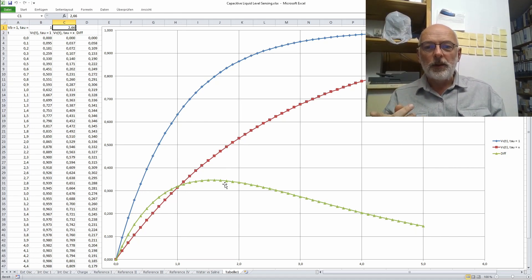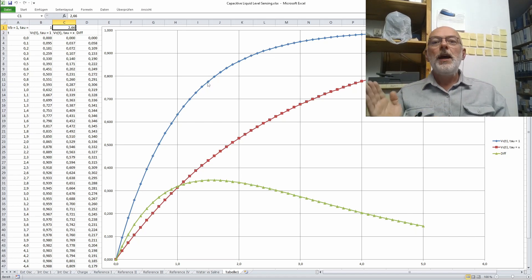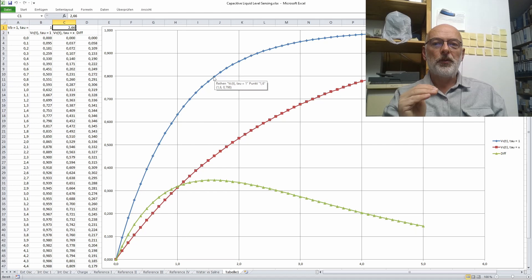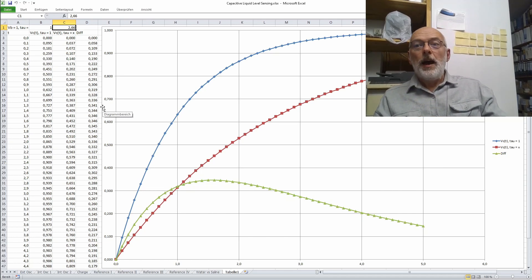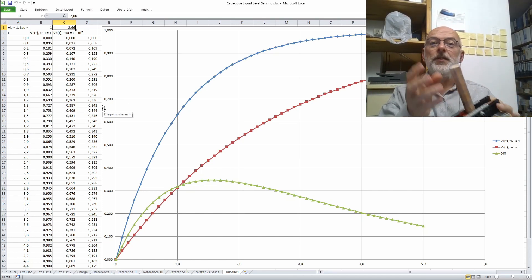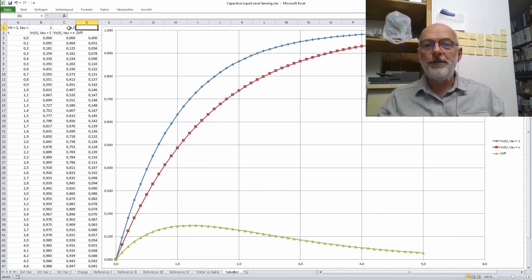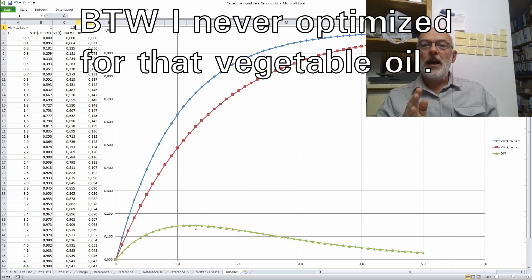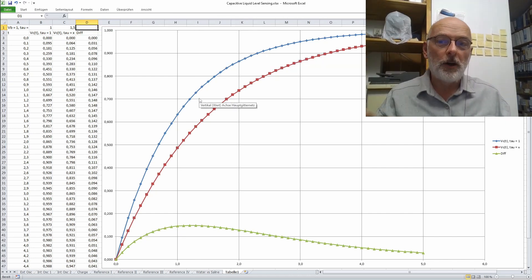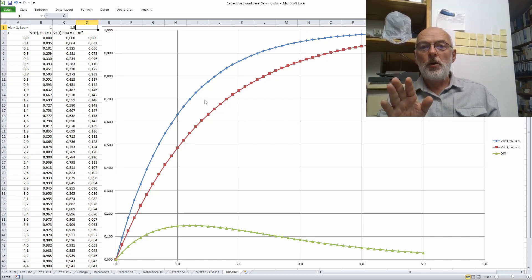And to get the most accuracy out of your analog to digital converter, that is to use the most of its dynamic range, you want to measure at a point of time where the two charge curves of your dry and your fully wetted sensor have the greatest distance. And this would be if we look at the green curve about here. So I tuned the whole thing that in dry state, we would charge up to about 80% of full scale of my analog to digital converter.